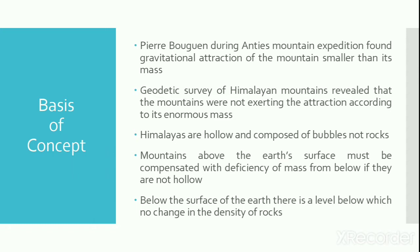The following explanations were given for this anomaly. One is that the Himalayas are generally hollow and composed of bubbles and not rocks, and hence the gravitational attraction will also be low. This was criticized because if it was hollow, then the mountain range cannot stand on the surface of the earth. The second reason given was that if the mountains are not hollow, then the mountains above the surface must be compensated with a deficiency of mass from below. Thus the total weight will be low and hence the attractional force will also be low.